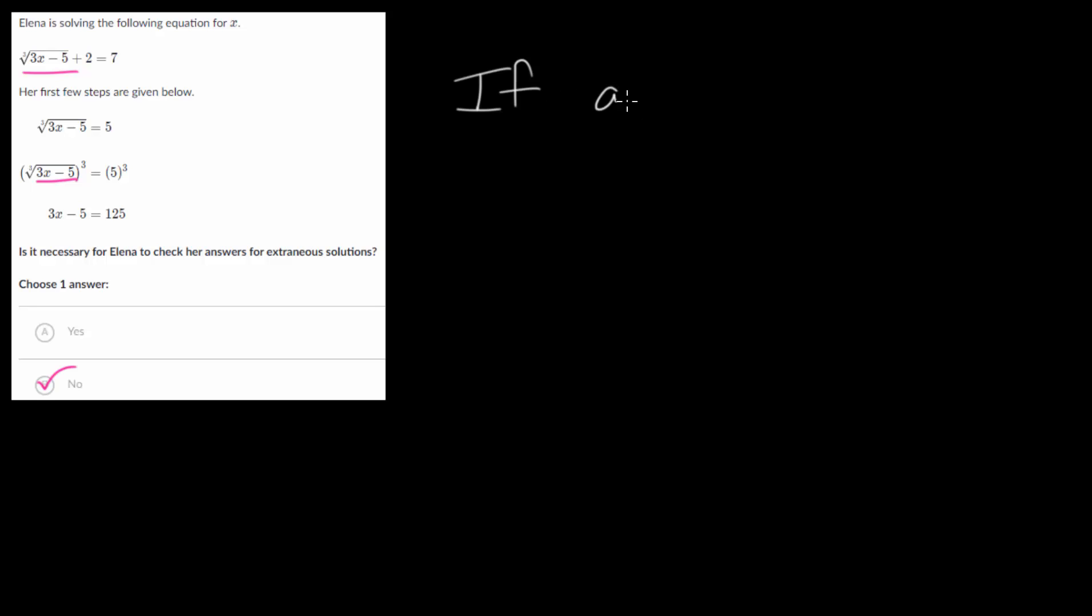So if a is equal to b, then it is true that a to the third power, if we cube both sides, would be equal to b to the third power. And we can see that if we reverse this. So now if we start with a cubed is equal to b cubed, then it is always true that a would be equal to b. And so to make further sense of that, let's look at a simple example.